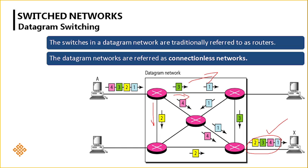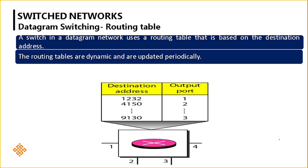Datagram switching may have good speed but it is not that reliable. Each switch maintains a routing table containing two fields: the destination address and the output port. It specifies where the node has to go and which port the switch should use to reach the respective destination. For example, if the switch uses output port one, it can reach destination nodes one, two, or three; if it uses output port two, it reaches destination address four, one, five, zero.